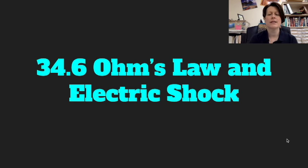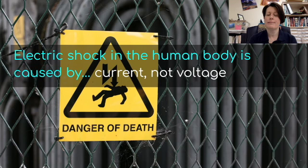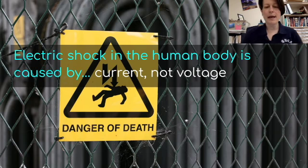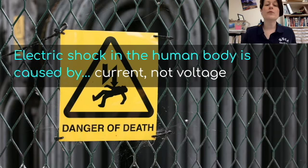Let's talk about Ohm's Law and electric shock — something really practical that could potentially save your life. The first thing to know is that electric shock in the human body is caused by current, not by voltage. You could come in contact with a very high voltage source and not be shocked, as long as no current passes through your body. It's when the current passes through your body that you're in danger, especially if it goes across your heart. That's why electricians, if unsure about a circuit, will put one hand behind their back and work with one hand only — this prevents a path for current to cross through their heart.